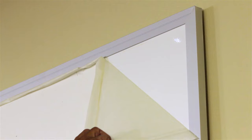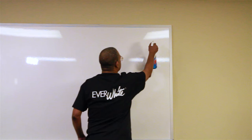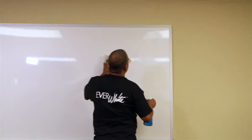Peel off the protective layer from the Everwhite surface. The Everwhite surface must be cleaned with window or glass cleaner and a soft cloth prior to use to remove any residue from the protective layer.